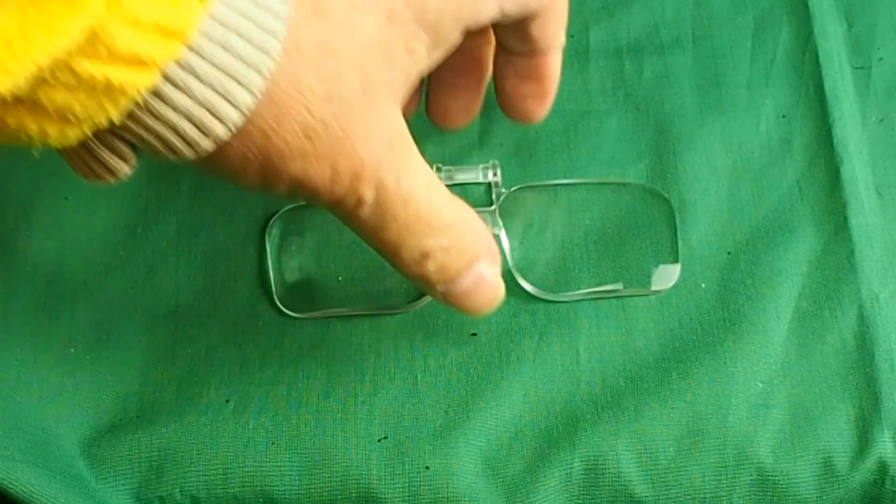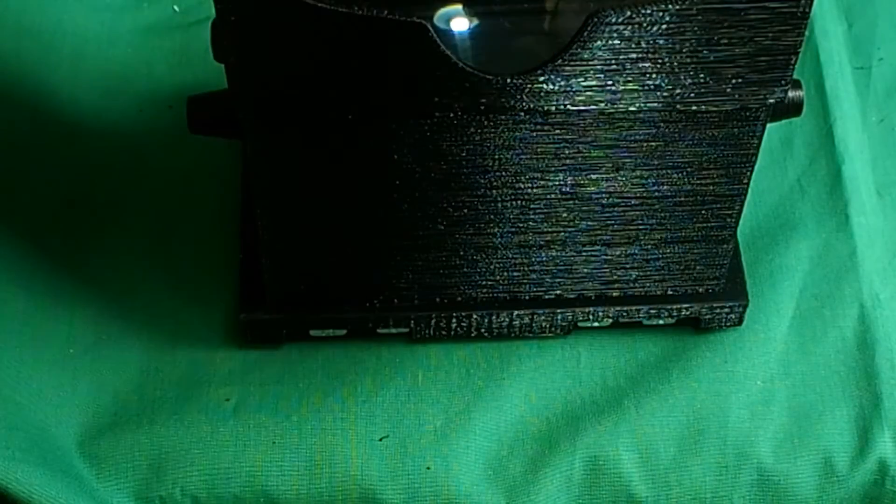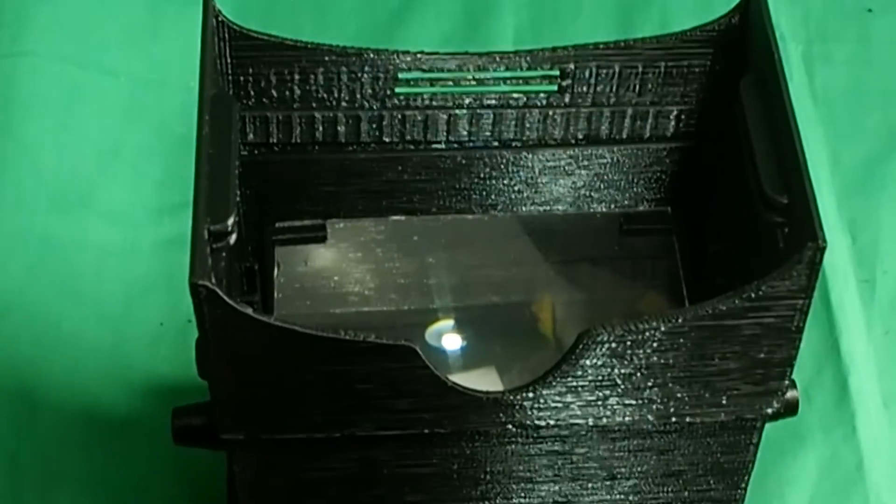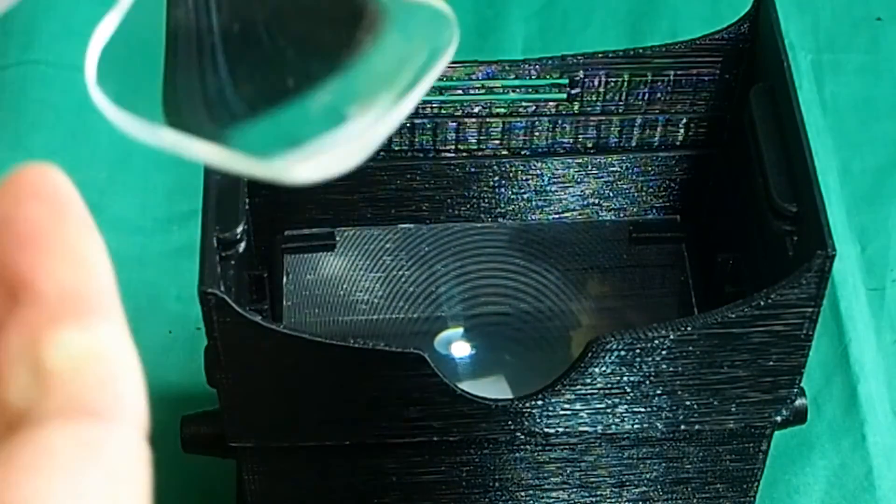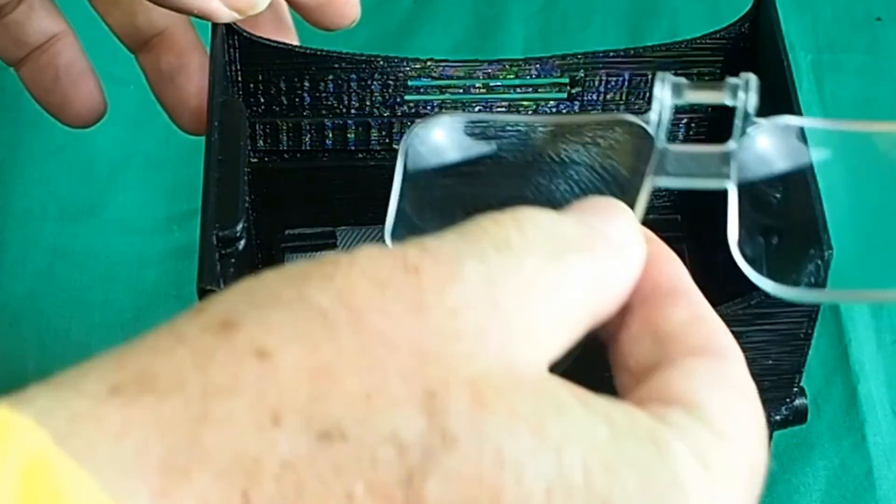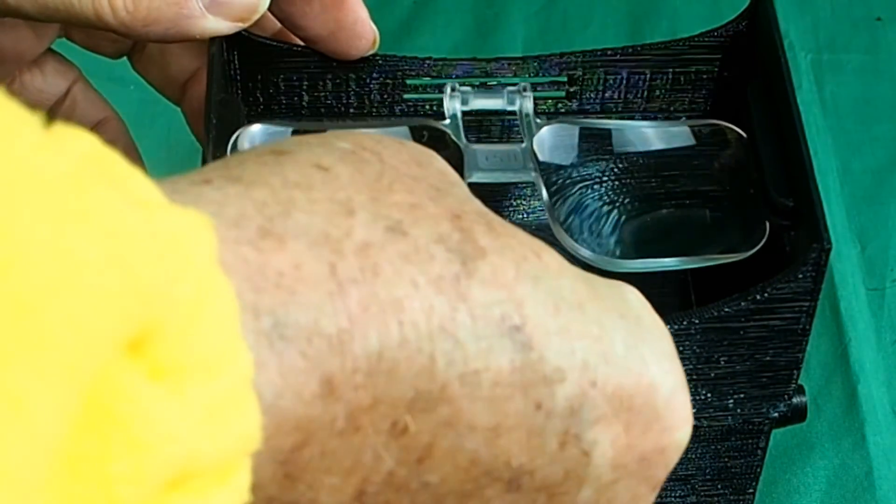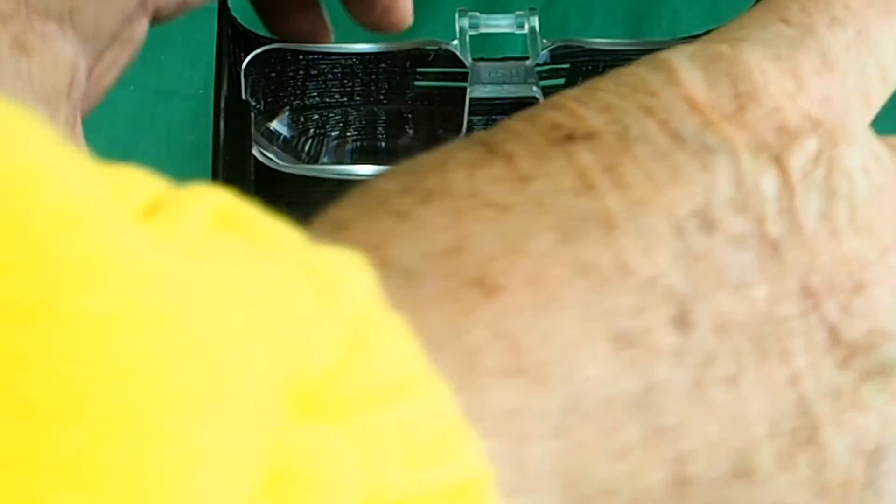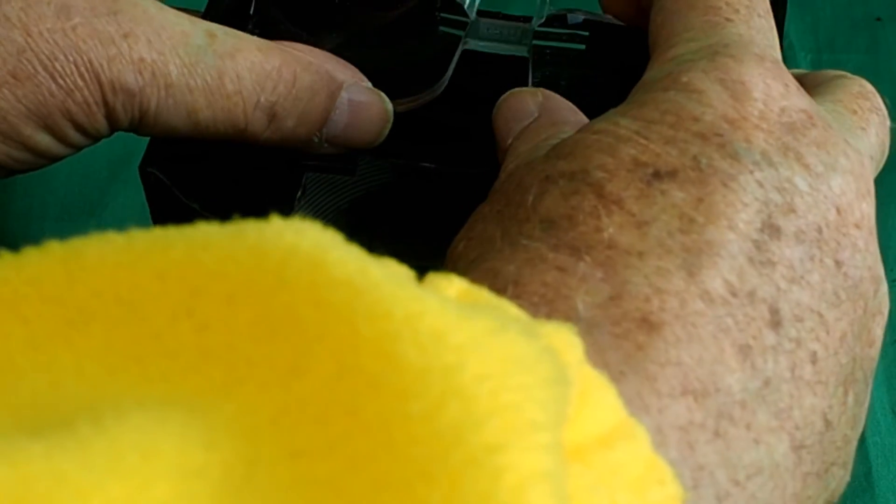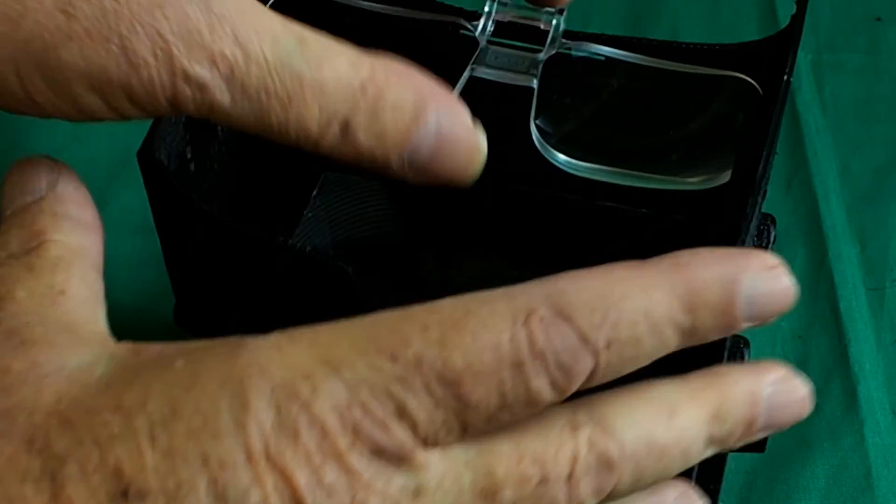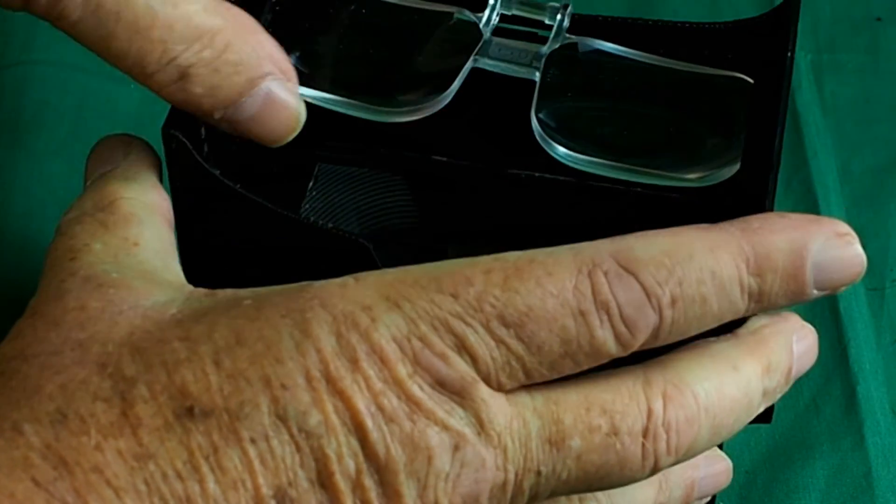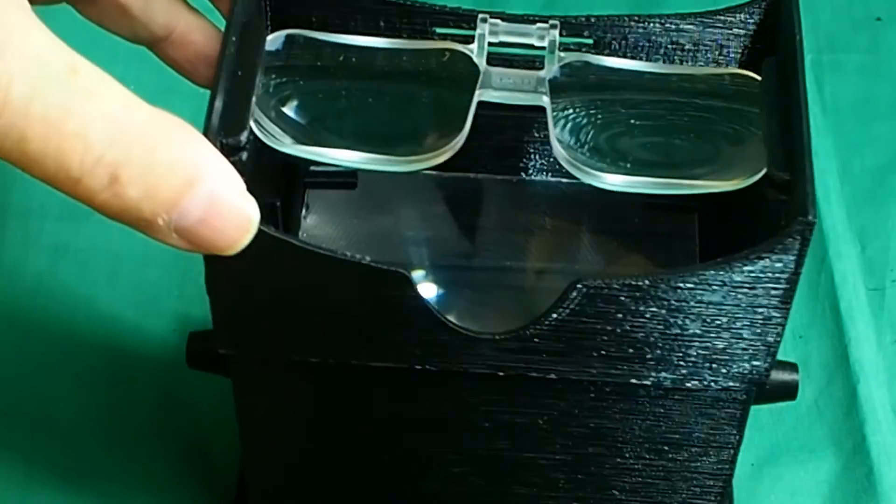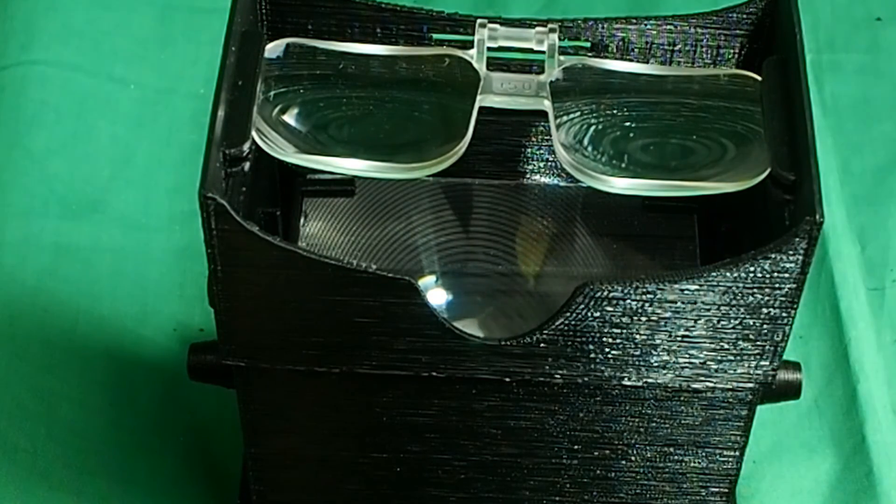That then mounts in the brackets provided, curved side facing downwards, inside the eyepiece. Just slide it in until it's in a comfortable position for your vision.